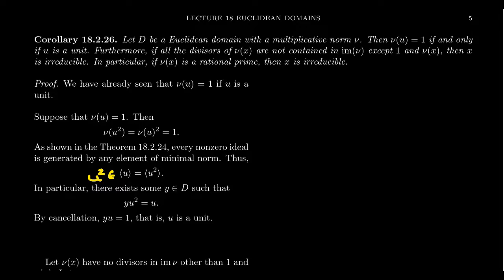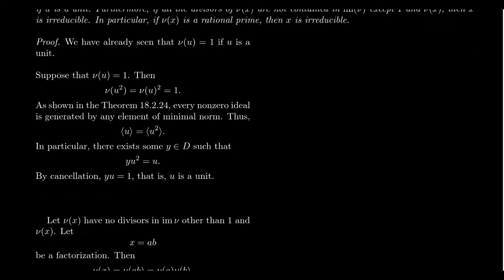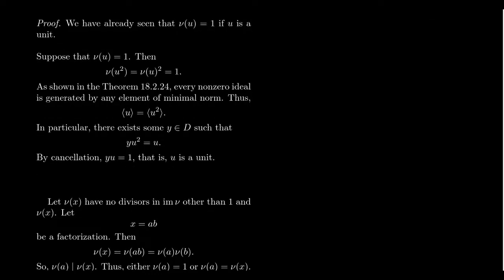But since U squared is also minimum norm, we get that these two principal ideals must be one and the same thing. So U and U squared, if U wasn't a unit, they would have to be associates of each other. So in particular, there exists some element Y in the domain D, such that Y U squared is equal to U, which we're in a domain, so we can cancel. If you cancel the U from the right-hand side of the equation, you get Y U equals one, so therefore, Y is a unit.